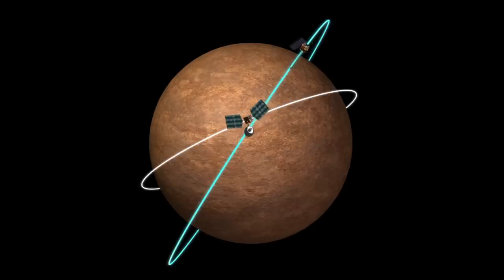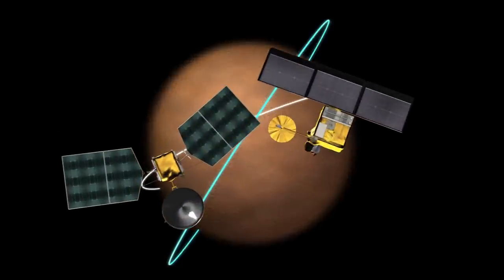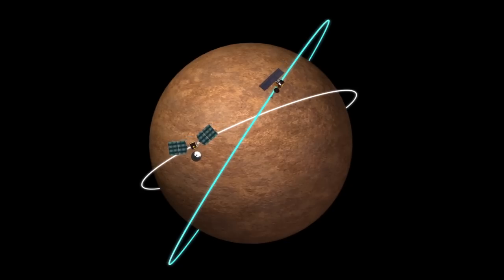The Mars Reconnaissance Orbiter, MRO, and Mars Odyssey circle Mars at low orbits between 250 and 450 kilometers.